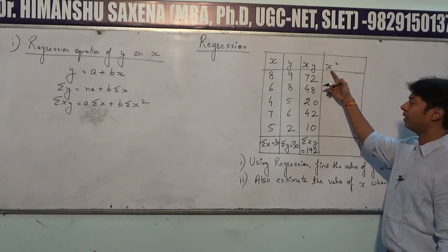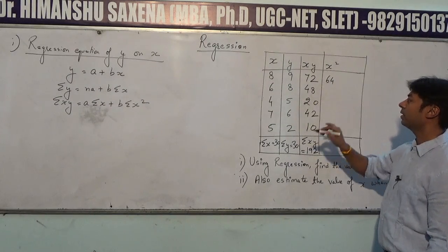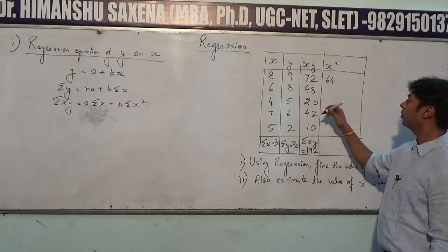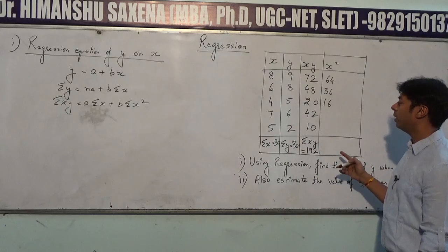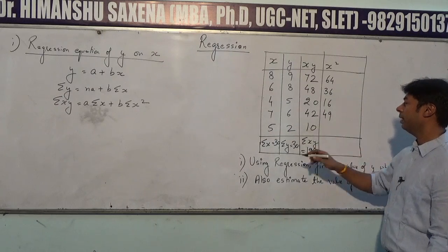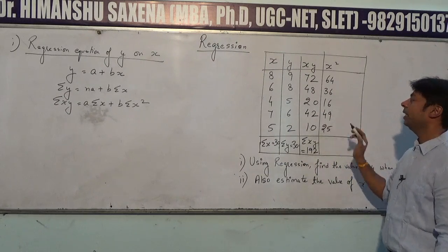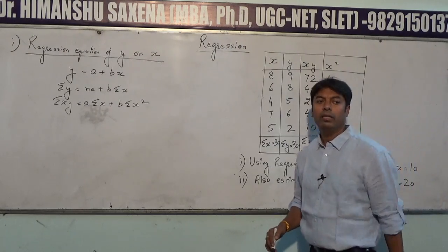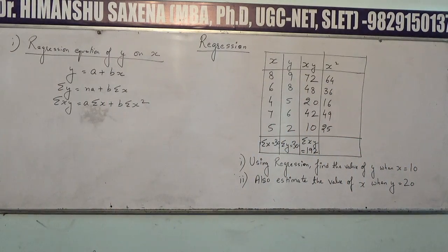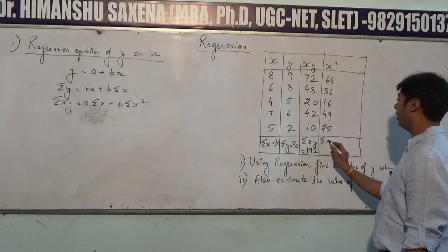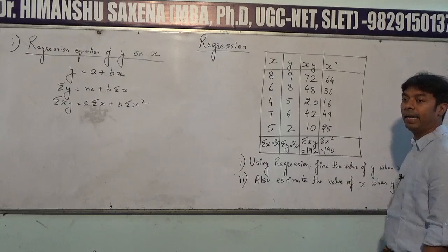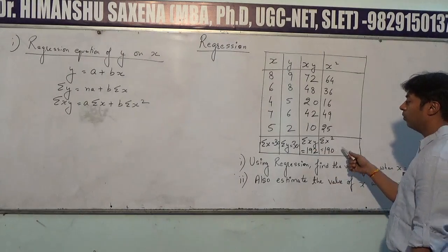Now calculate x²: 8²=64, 6²=36, 4²=16, 7²=49, and 5²=25. Adding all the values of the x² column gives summation x² equal to 190.